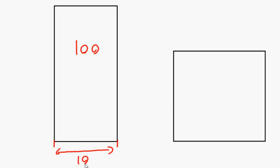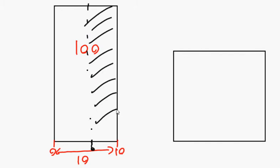Now what I might ask you is: if this rectangle goes from zero to ten as a histogram, how many people would be represented from six to ten? How many people would be represented by this part of the histogram, this part of the rectangle? Do you have any idea how to do that?